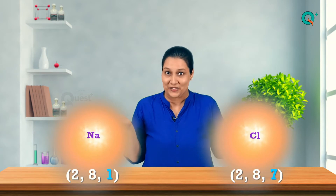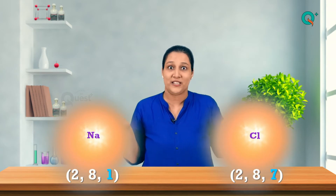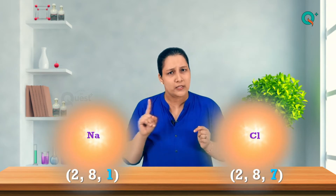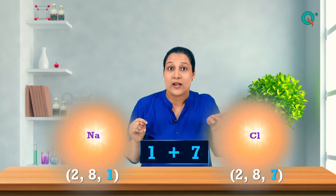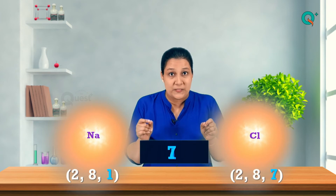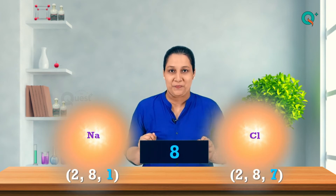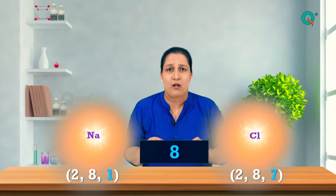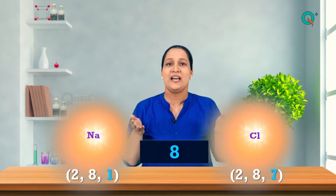Sodium chloride, NaCl — where sodium is the metallic element and chlorine is the non-metallic element. When you observe the electronic configurations of both atoms, sodium needs to lose one electron whereas chlorine needs to gain one electron in order to obtain an octet configuration. The octet configuration is the presence of eight electrons in the outermost shell of any atom.